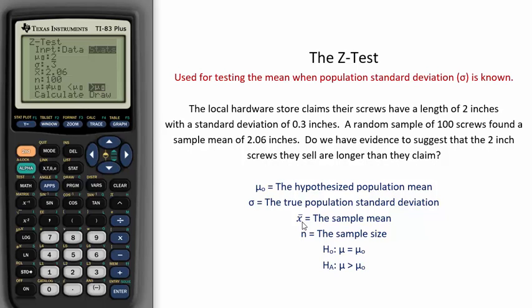Do we have evidence to suggest that the 2-inch screws they sell are longer than they claim? In this instance, we are talking about the alternative hypothesis. We want to see if there is evidence that the true mean is greater than the hypothesized mean of 2.